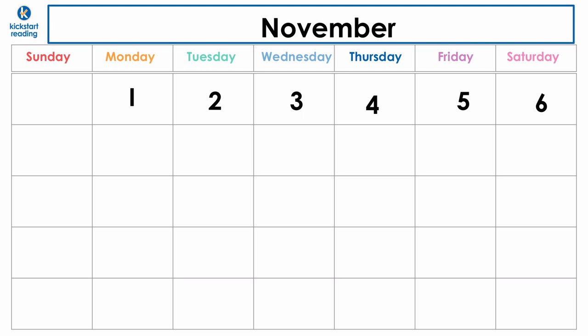Watch where I write the number 7. We're going to write the number 7 in that box right there. We're going to keep going. Number 8. 9. 10. 11. 12. 13. You're doing awesome. We've already filled out the first two weeks of November.